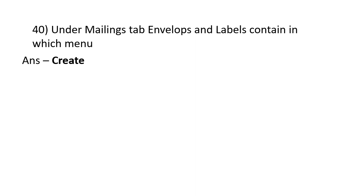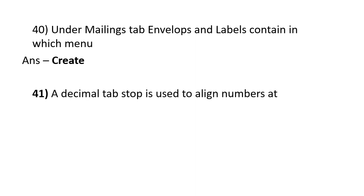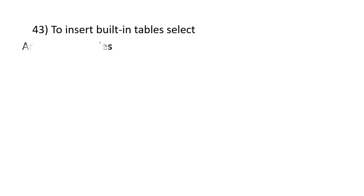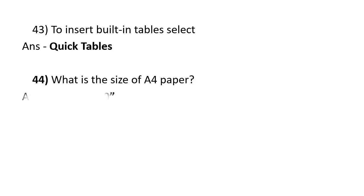Under the Mailings tab, Envelopes and Labels are contained in the Create menu. A decimal tab stop is used to align numbers at the decimal point. Superscript and subscript are available in the Font group. To insert a bullet in tables, select the table cells. What is the size of A4 paper? 8.27 x 11.69 inches.